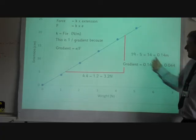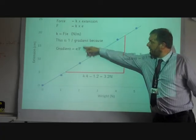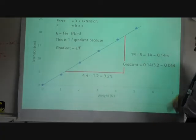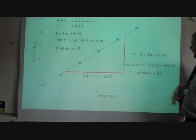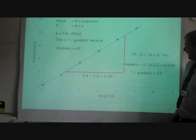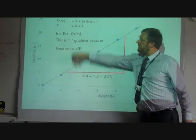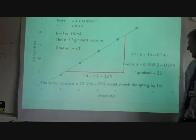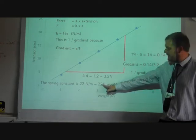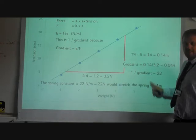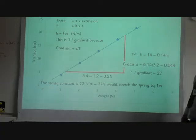Remember what we said, that our gradient, we need to do 1 over the gradient. So we need to do 1 divided by 0.044, and that comes to 22. So what is 22? 22 is the spring constant, K. Our units are newtons per meter. So we would say that 22 newtons would stretch the spring by 1 meter.